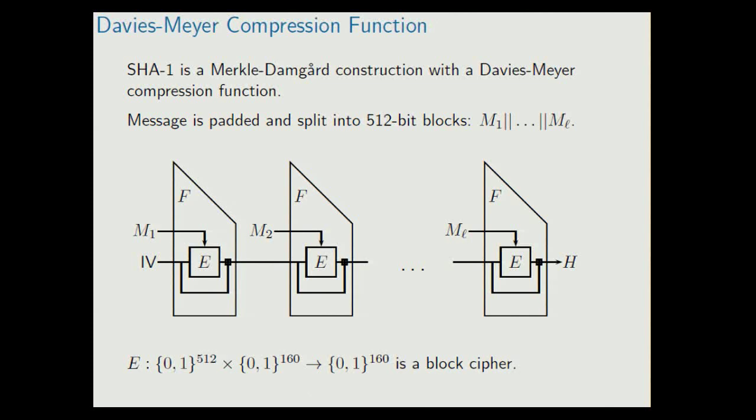So let's see how it works. At the example of SHA-1, SHA-1 is a Merkle-Damgård construction with the Davies-Meyer compression function. A message is padded, then cut into blocks of 512 bits, and each block is processed separately by always the same compression function. And this compression function is built from a block cipher using plaintext feedforward.